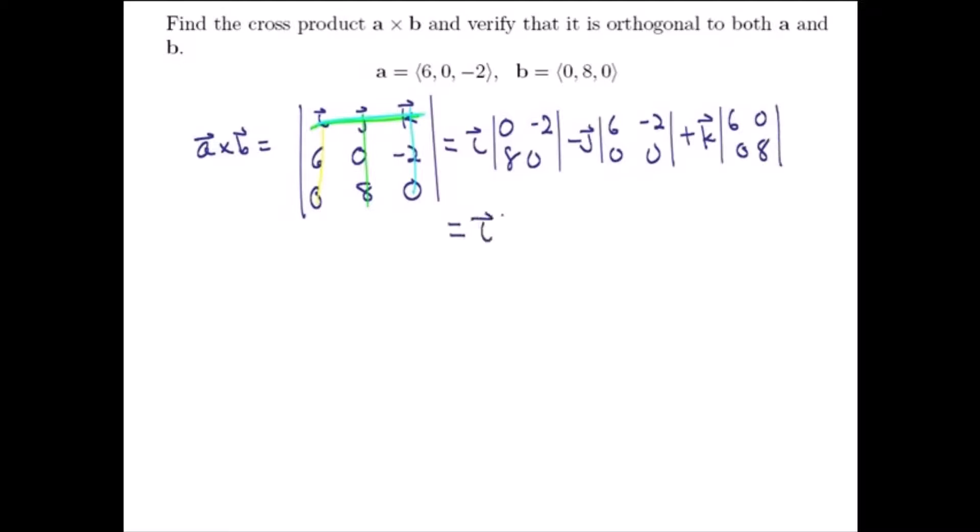So this is equal to I times, well, taking the determinant of this 2 by 2, we take the product of the main diagonal minus the product of the off diagonal. That's 0 minus a minus 16 minus J times 6 times 0 is 0 minus 0 times negative 2, which is 0, plus K times 6 times 8 is 48 minus 0.